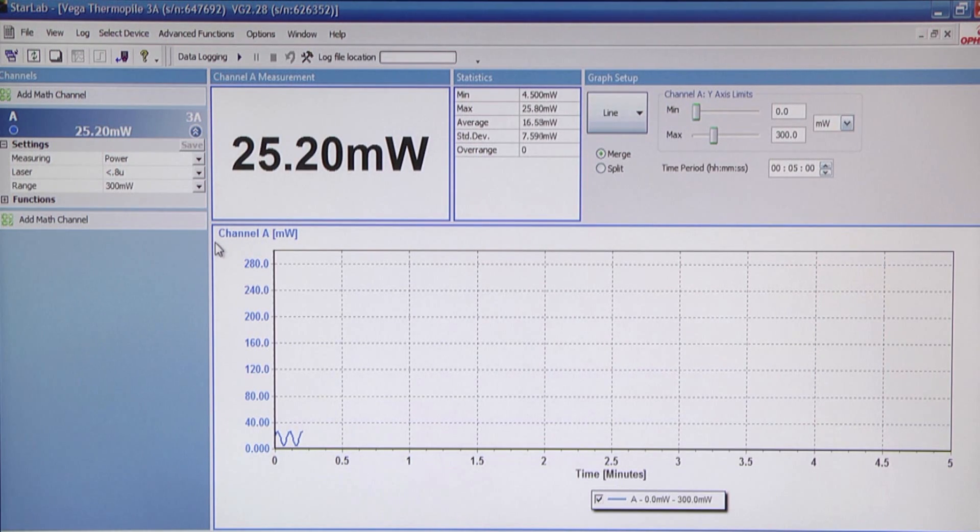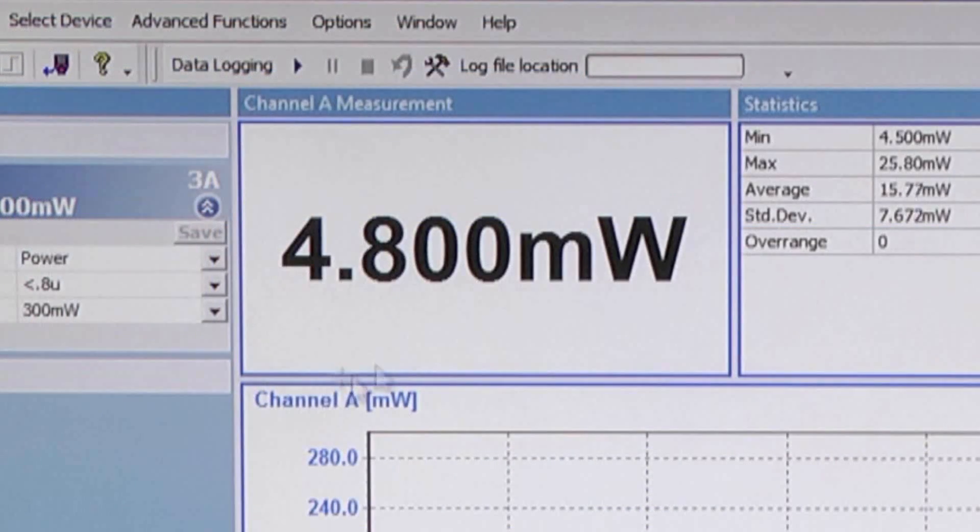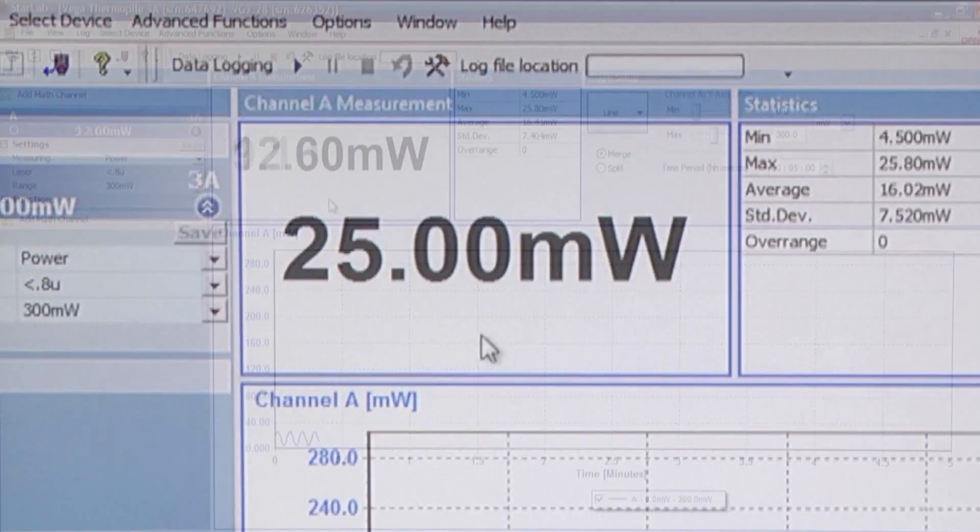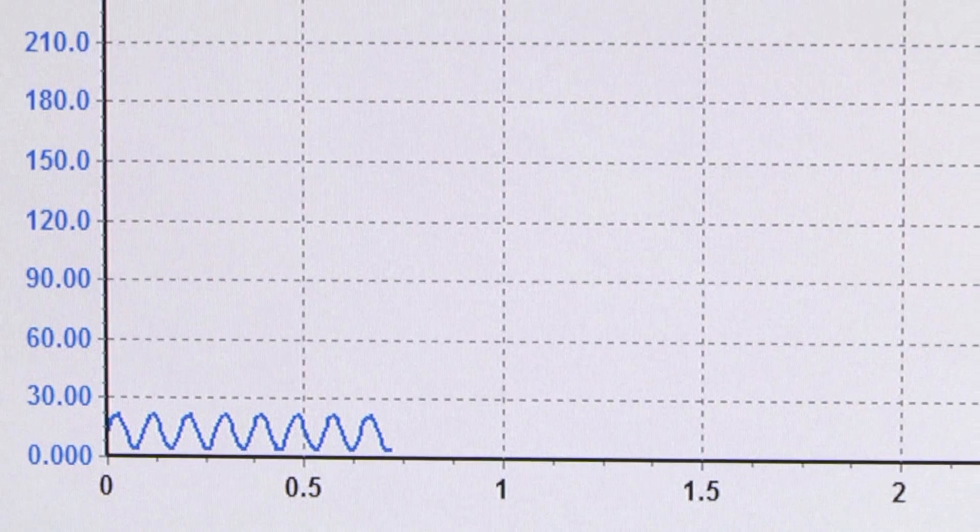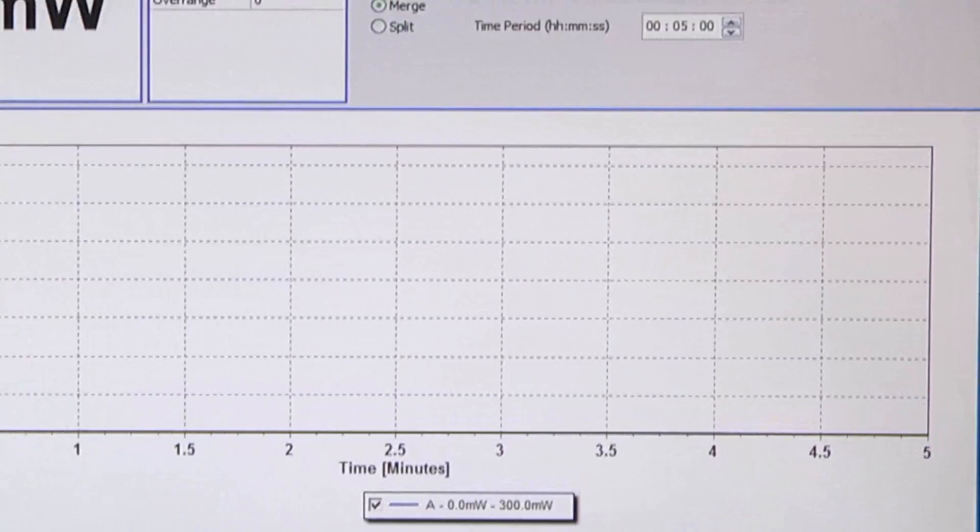The numerical measurement value of the selected channel is displayed here in this box. A graph of the measurements is shown at the same time in this area. The default graph is a line plot and the default time scale is 5 minutes.